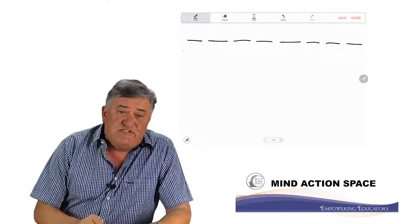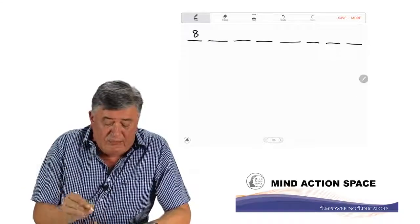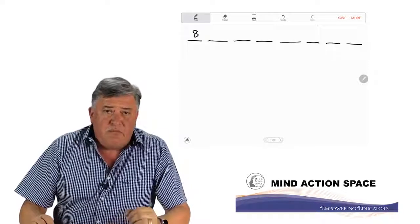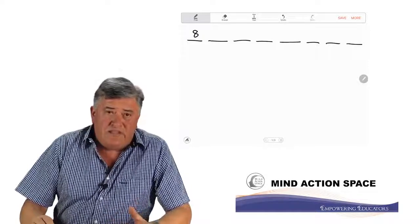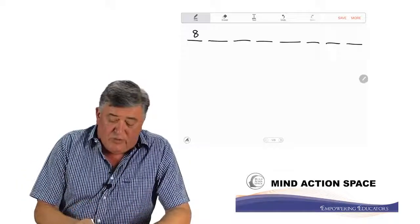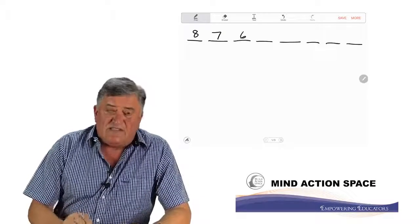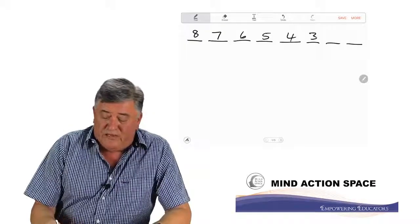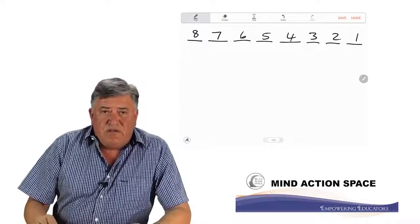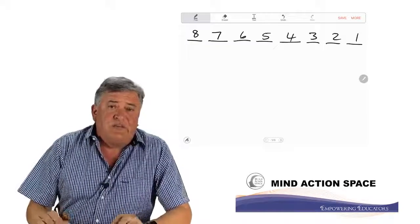For the first position, we have eight possibilities. Please remember, one of them must be placed there — there are eight ways to do it. In the second position, we will only have seven letters remaining. So in the third it will be six, then five, four, three, two, one. So the eight positions will be eight, seven, six, five, four, three, two, one, because the letters can't repeat.